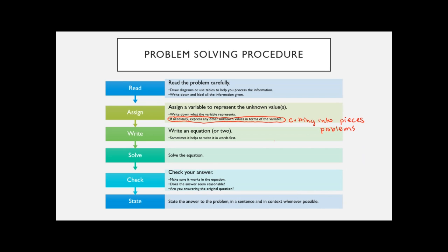After you've figured out all your variables and made some notes and drawn pictures, you start to write your equations. You may have one equation or two — when solving linear equations you generally don't have more than two. Sometimes it's worth writing down in words what's going on and then translating that to math, using words that specifically mean things like multiply or divide.